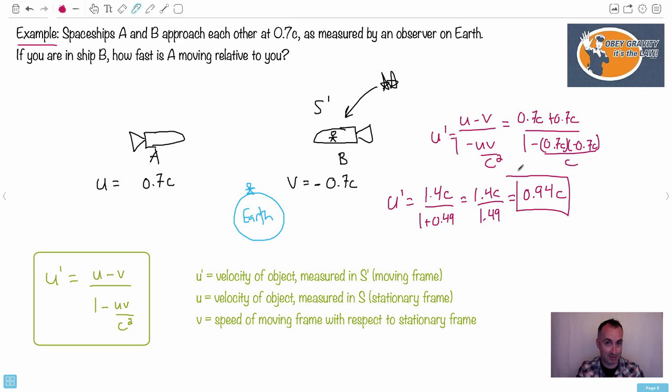So that's what, do you notice what happens here? If you do the transformation, you'll end up with 0.94C. You haven't gone faster than the speed of light, so everything's okay. So that means you're going to approach each other. You're going to think that spaceship A is coming towards you at 94% the speed of light, but not greater. Turns out that's how this works. It's pretty amazing, isn't it?